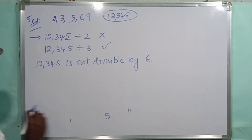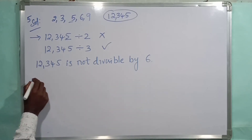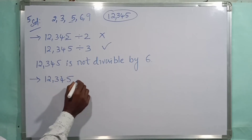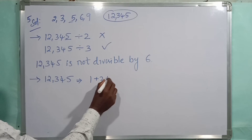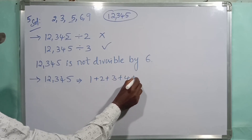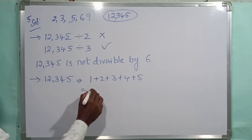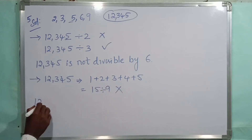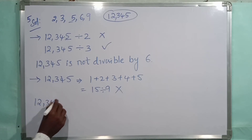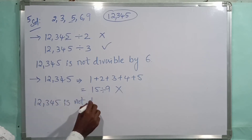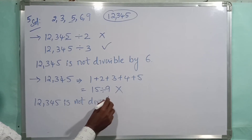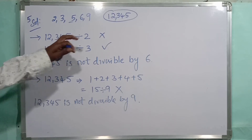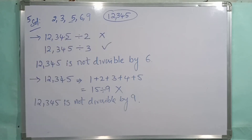Now for 9: the divisibility rule for 9 is that the sum of the digits should be divisible by 9. For 12345, the sum of digits is 1+2+3+4+5 = 15. Is 15 divisible by 9? No. So 12345 is not divisible by 9.